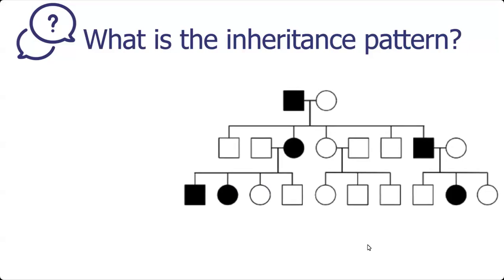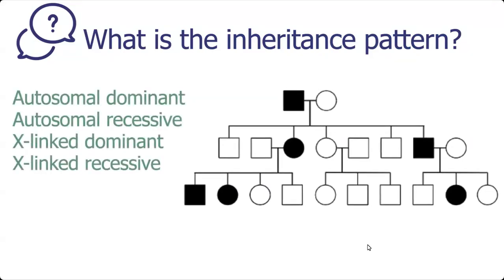For these questions there are four different inheritance patterns we can choose from: autosomal dominant, autosomal recessive, x-linked dominant, and x-linked recessive.